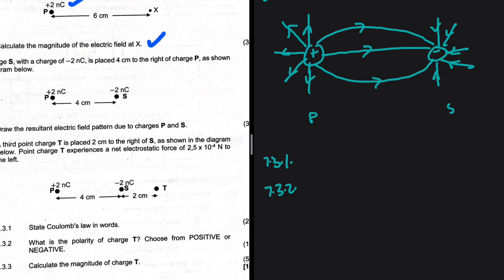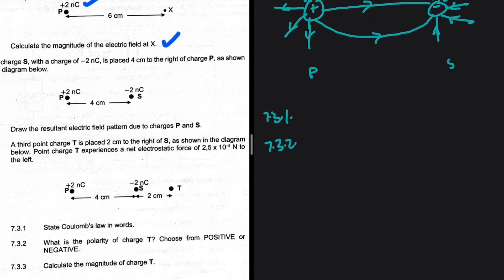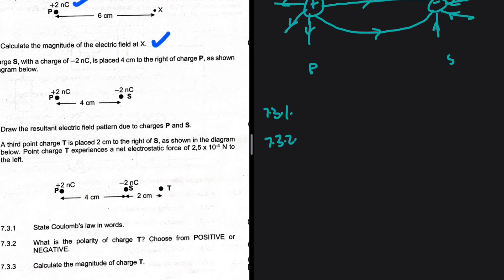For 7.3.2, we need to find the polarity of charge T. A third point charge T is placed 2 centimeters to the right of S. Charge T experiences a net electric force of 2.5 times 10 to the minus 4 newtons to the left. Let's consider the case where T is positive: S and T would attract, so the force due to S is to the left. P is far away, so the force due to P would be smaller.